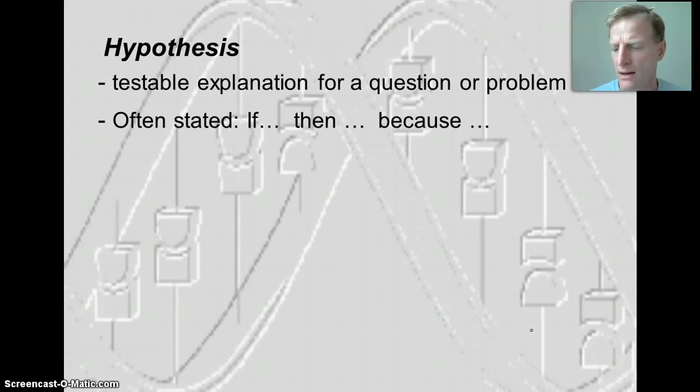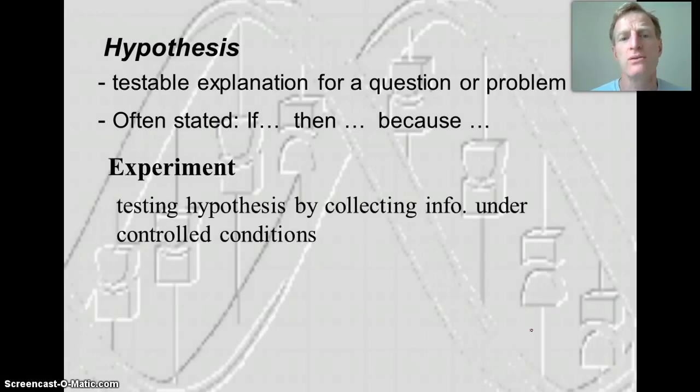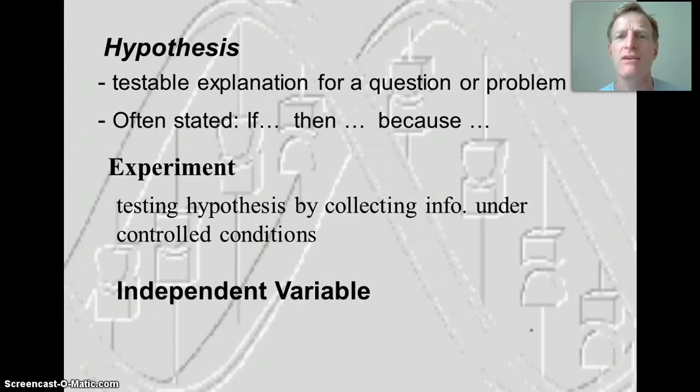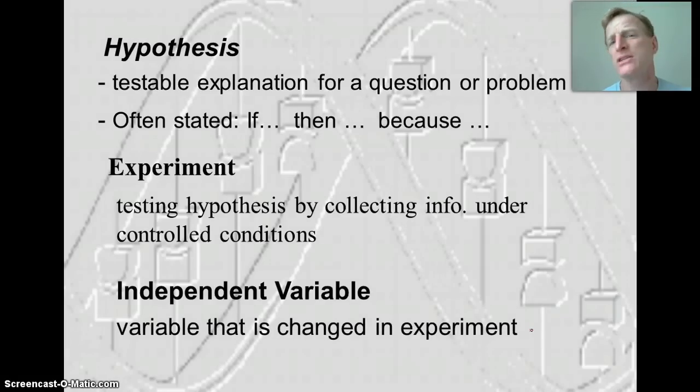So when we set up a hypothesis, there are variables that are going to affect the outcome of our experiment. And we want to control those variables. So when we do that experiment, we're going to be testing the hypothesis under controlled conditions. And in those conditions, we only want to adjust one variable or change one variable. That variable is what we call the independent variable. So let's say we're going to grow plants and we want to test nitrogen and how nitrogen affects plant growth. That would be the one variable that we would affect. So that nitrogen, we would say, is the variable that we change.